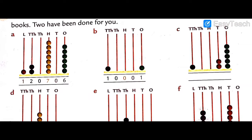Now the second example. The place value chart gives: lakh, ten thousand, thousand, hundred, tens, and ones. One lakh, twenty thousand, seven hundred, six. For the next part, the lakh place is zero so no need to write it. We have ten thousand — one digit — and thousands is zero, hundreds is zero, tens is zero. So this five-digit number is ten thousand one.